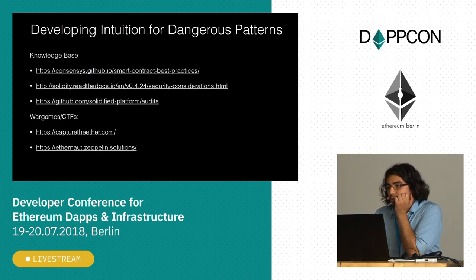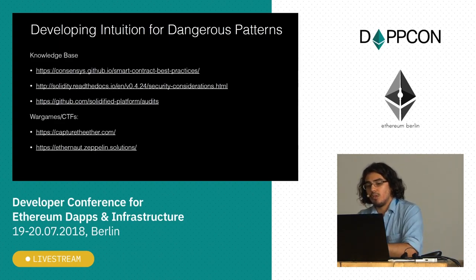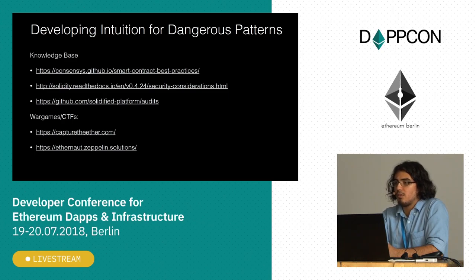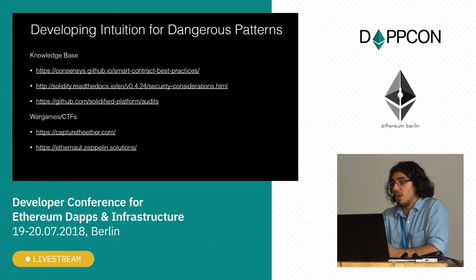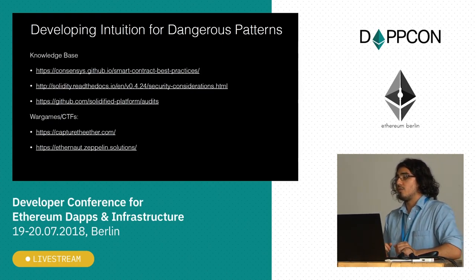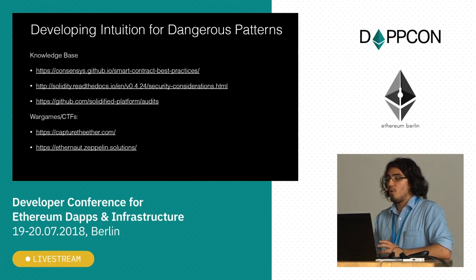So how do you develop intuition for these dangerous patterns? The first thing I would do is go to these resources. Consensys Diligence made a really, really good guide for smart contract best practices. They have examples, dangerous patterns, and what to do instead to make sure you don't fall into these traps — because there's a lot of developers coming from other paradigms, from other languages, trying to develop software the same way they did before, and there's a lot of gotchas if you go about it that way.